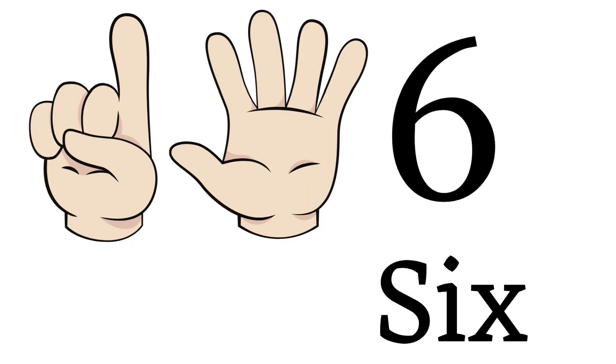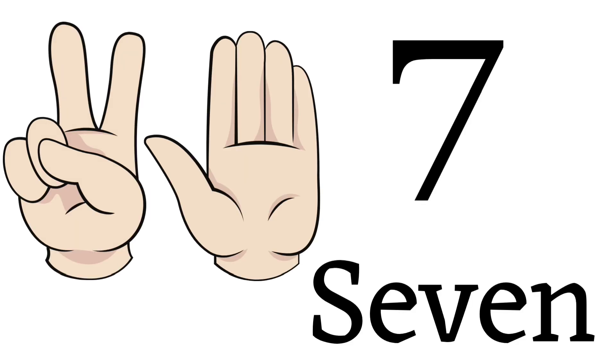Keep all the fingers on one hand open and on the other hand open one finger. That is called six. S-I-X, 6. Now open two fingers. Seven. S-E-V-E-N, 7.